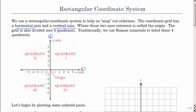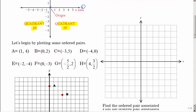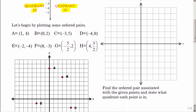In algebra, X and Y are what we usually label the axes, but they can be labeled anything you want. The center where those intersect is called the origin, and the grid is divided into four quadrants. Traditionally we use Roman numerals to label these four quadrants, and you go in a counterclockwise direction: quadrant one, two, three, and four.